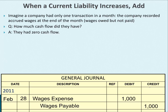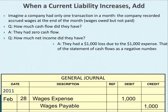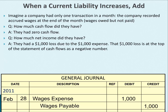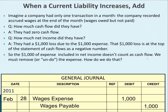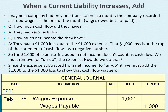The statement of cash flows begins with net income. If this is the only transaction, there is no revenue and there is a $1,000 expense, resulting in a $1,000 loss — a negative number at the top of the statement. So how do you go from negative $1,000 net income to a cash flow of zero? You add the increase in wages payable. Since the expense subtracted from net income, to undo it we add the $1,000 to the $1,000 loss, showing that cash flow was zero.